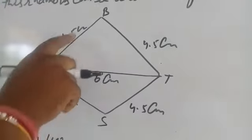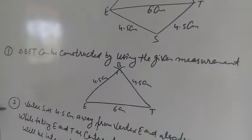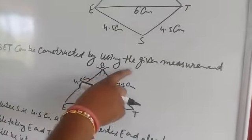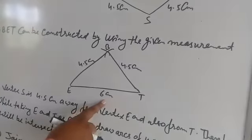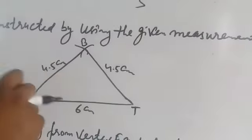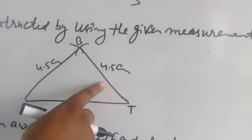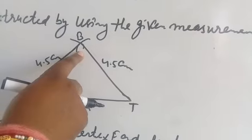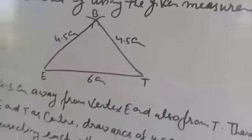Construction of rhombus: First, Triangle BET can be constructed using the given measurements. Draw ET = 6 cm. Take E as center and make an arc of 4.5 cm. Take T as center and make an arc of 4.5 cm. These intersect at point B. Join E to B and B to T.